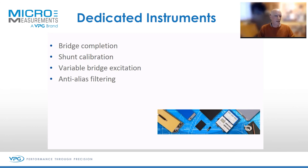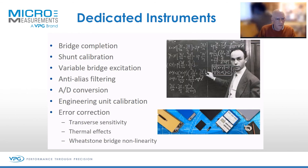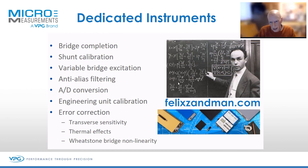Anti-aliased filtering is essential, particularly because almost every instrument now is digital and has some sort of analogue-to-digital converter. You then calibrate in engineering units and apply error correction — the data sheet shown earlier provides additional information that you can plug into your instrument to make error corrections. This slide includes a picture of Dr. Felix, the man who started the company back in the 1960s and who started all of this.